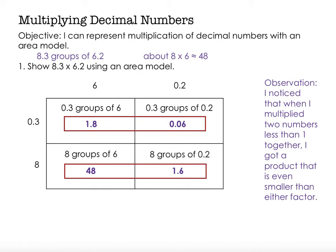So I'll have a 1 in the ones place, an 8 in the tenths place, and a 6 in the hundreds place. So that's going to be 1 and 86 hundredths. With 48 and 1 and 6 tenths, I can easily add those into my head, and I have 49 and 6 tenths.